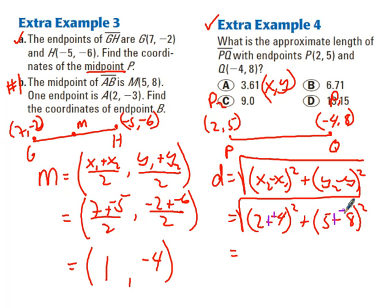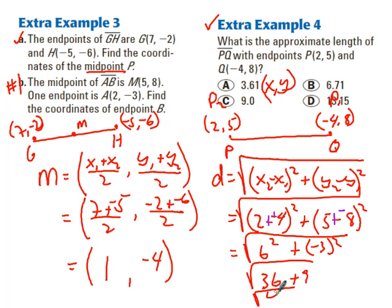So, that gives me 2 plus positive 4 is 6 squared, plus 5 plus negative 8 is negative 3, 3 squared, which is 36 plus 9, or the square root of 45. I will go ahead and take this one step further.